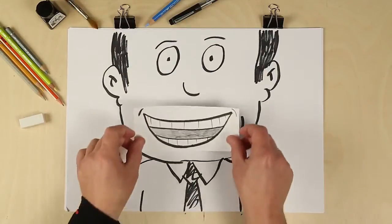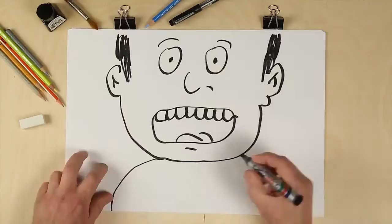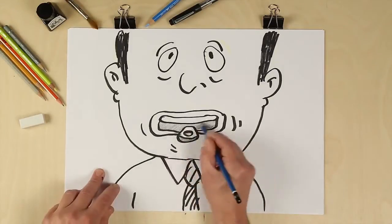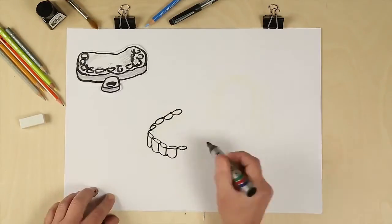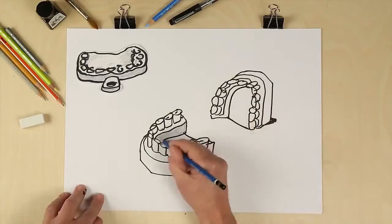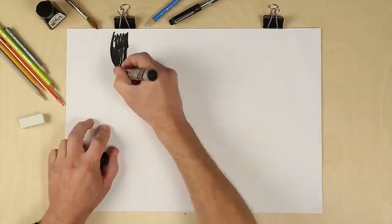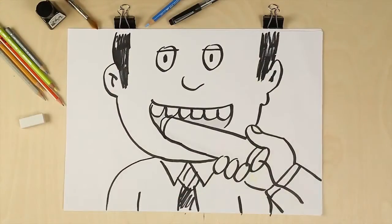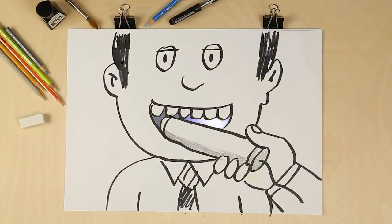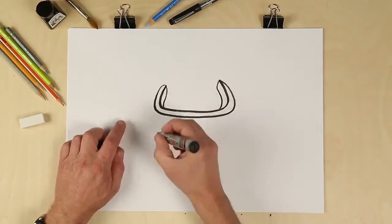And with a lot less discomfort. Every orthodontic appliance used to start with a physical impression that we use to create plaster stone models. With digital orthodontics, instead of uncomfortable impressions, we take a 3D scan at the computer.